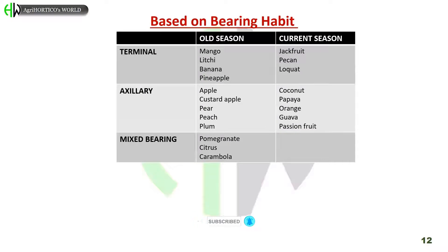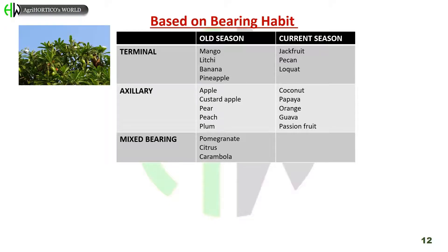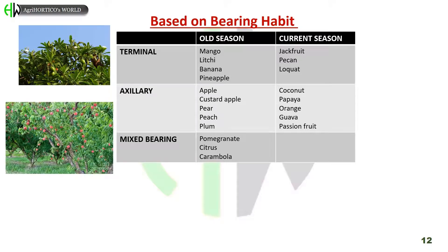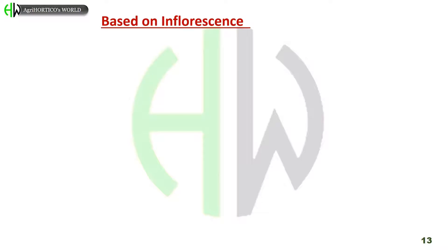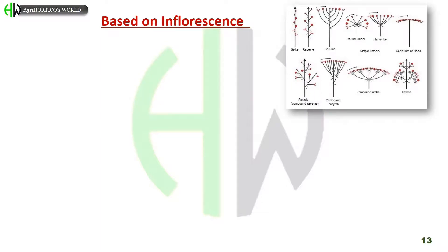Classification based on bearing habit of fruit trees. Terminal bearing of old season: mango, litchi, banana, and pineapple. Terminal bearing of current season: jackfruit, pecan, and loquat. Axillary bearing of old season: apple, custard apple, pear, peach, and plum. Axillary bearing of current season: coconut, papaya, orange, guava, and passion fruit. Mixed bearing is observed in pomegranate, citrus, and carambola.